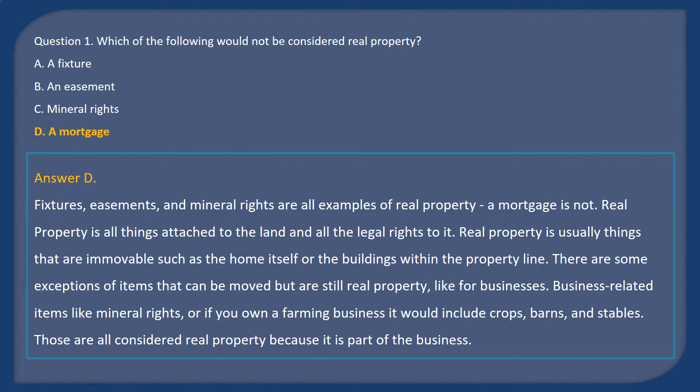There are some exceptions of items that can be moved but are still considered real property. For businesses, this includes items like mineral rights, and if you owned a farming business it would include crops, barns, and stables. Those are all considered real property because they are part of the business.